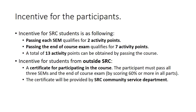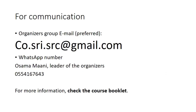Regarding incentives for participants: if you're an SRC student, you will get two activity points for passing each SEM and seven activity points for passing the final exam. If you pass the whole course, you get 13 activity points. If you're from outside SRC, you will get a certificate for participating in the course upon completion, provided by the SRC Community Service Department. For communication, you can reach us using the email co.sri.src@gmail.com or via the provided WhatsApp number. For more information, please check the course booklet. Thank you.